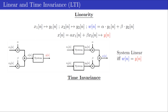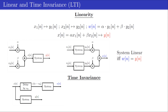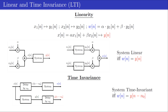A deeper understanding of time invariance can be shown as follows. An input xn to a system results in an output yn. The block denoted as 'delay by n0' delays the input by n0 samples. On the one hand, we can first delay input xn by n0 samples, and then apply the delayed signal to the system. On the other hand, we can first apply the same input xn to the same system, and then delay the output by the same amount of n0 samples. A system is time invariant when both outputs are the same.